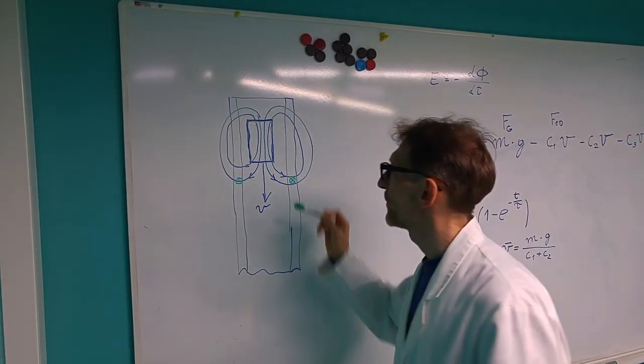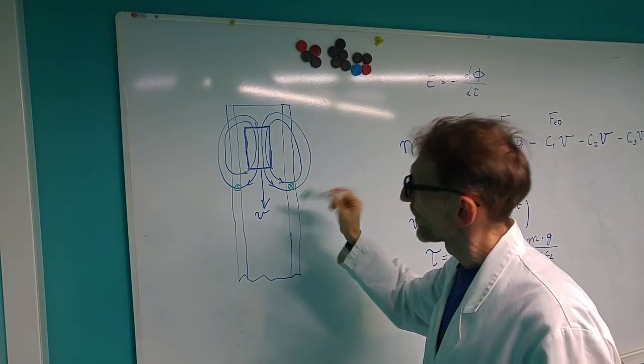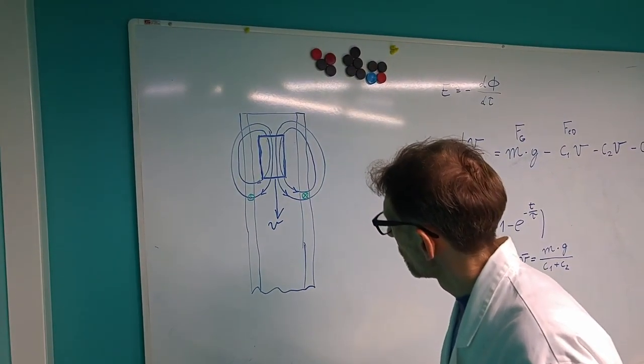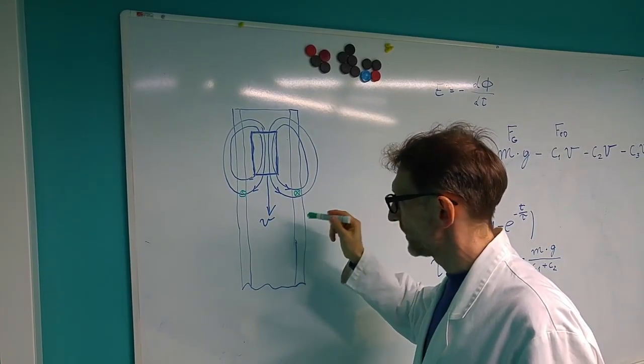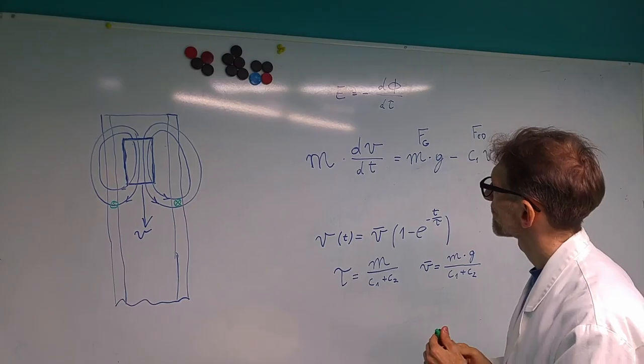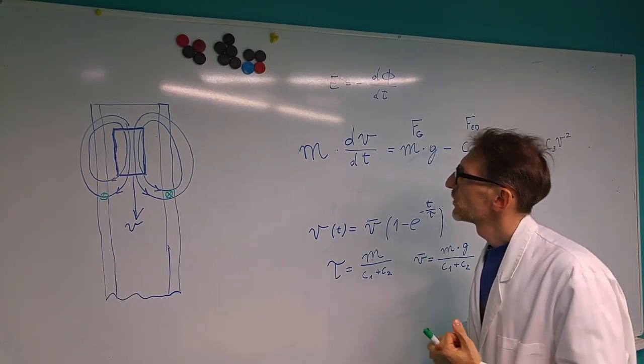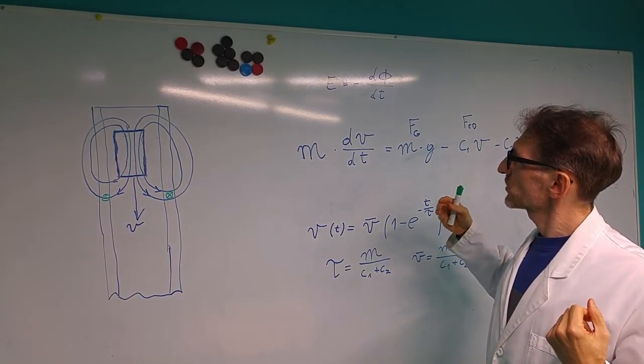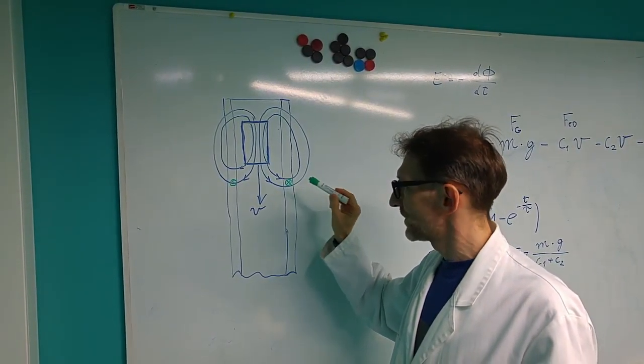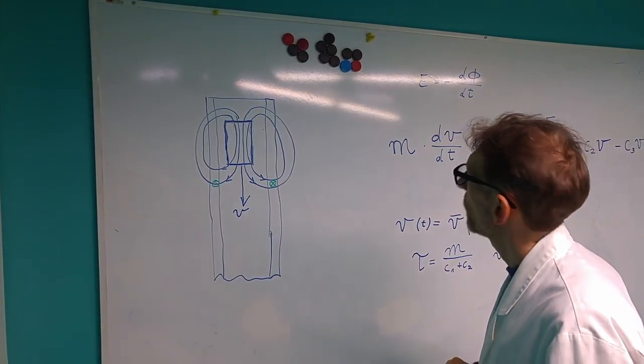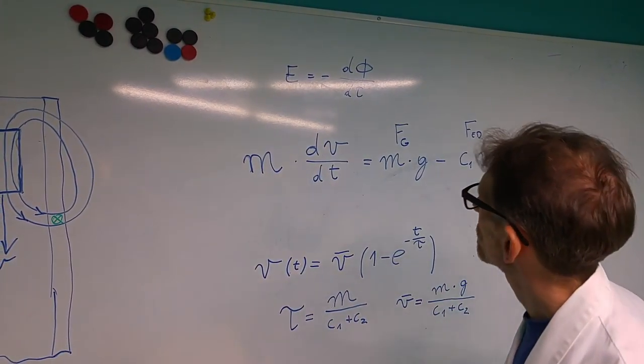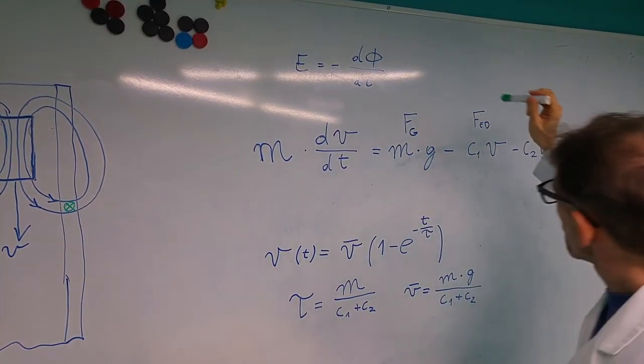So what happens when the magnet is falling through this copper pipe? The magnet has a magnetic field around it and as the magnet is moving, from the point of view of the copper pipe, there is a changing magnetic field. According to the Lenz law, the magnetic field in the pipe will induce an electric current, which will try to actually stop the magnet from movement. It's going to oppose the change of the magnetic field, which has generated that current. Now basically, this changing of the magnetic field or magnetic flux, we can describe through the velocity.